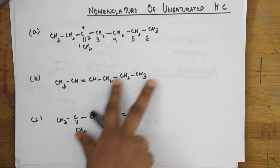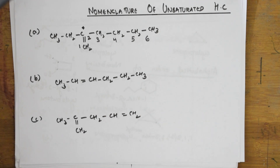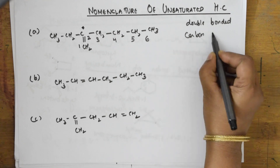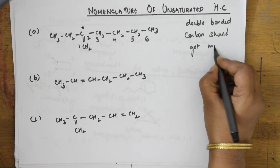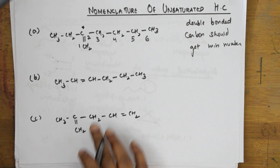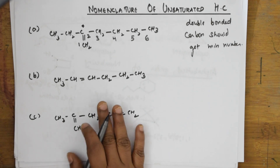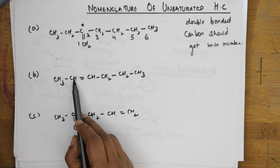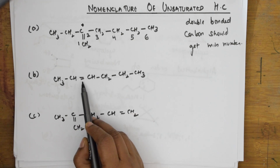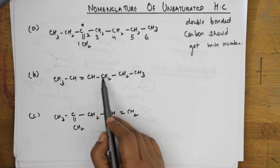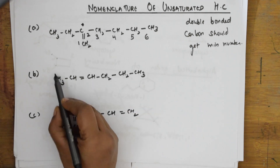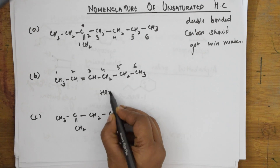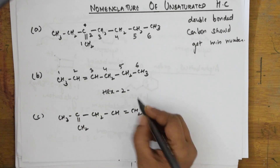The double-bonded carbons must get the minimum number. Starting from the correct end: one, two, three, four, five, six — the double bond is at carbon two. So the parent chain is hex-2-ene, since the double bond begins at the second carbon.